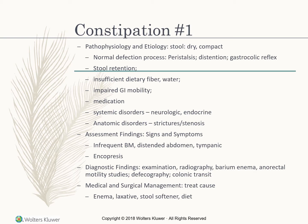Endocrine disorders like diabetes can cause constipation. Anatomic disorders can cause strictures and stenosis, and lead poisoning can also cause constipation. MS is a neurological condition that causes constipation, as do spinal cord lesions and injuries. Assessment findings include infrequent bowel movements, distended abdomen, tympani on percussion, and encopresis — which is the passing of liquid stool around a fecal mass.